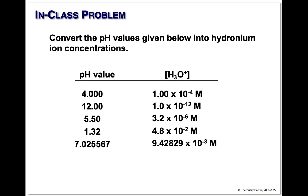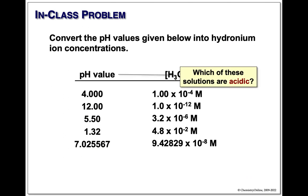Let's do a quick thought process: given a list of pH values, which are acidic solutions? Remember the rule: 7 is neutral, anything less than 7 is acidic. So any pH values below 7 on the list are acidic solutions.